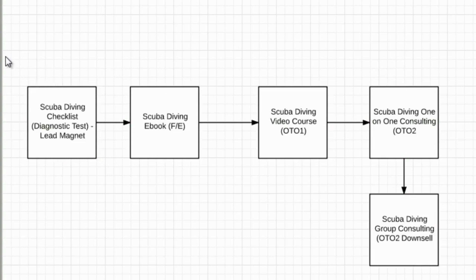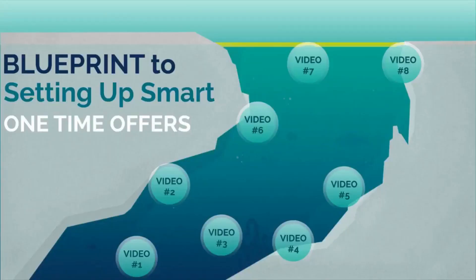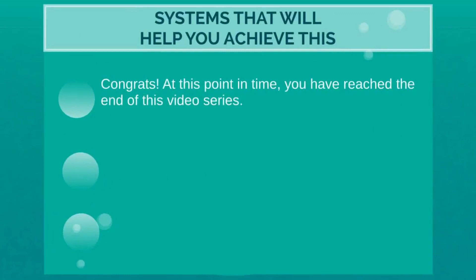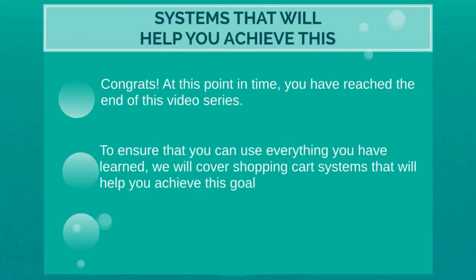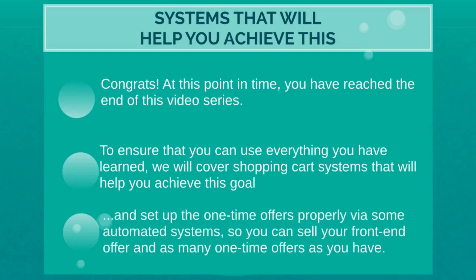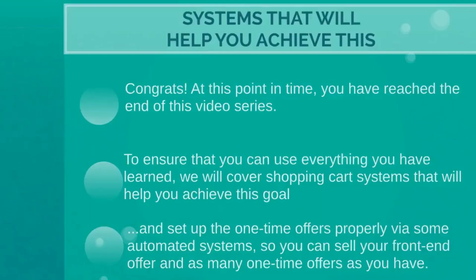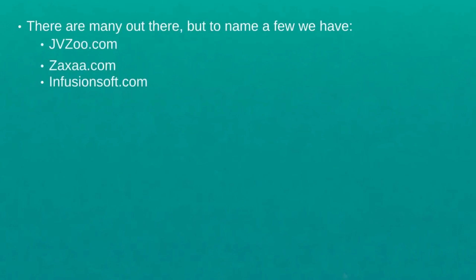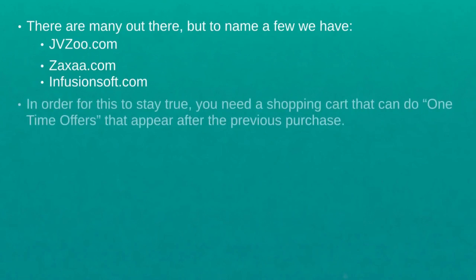Hello and welcome to video number eight. Congrats — you have reached the end of this video course! To ensure you use everything you've learned, we're going to talk about shopping cart systems that will actually help you achieve this goal and set up one-time offers properly via automated systems. So whenever somebody buys your front-end offer, they will be automatically presented with OTO one, OTO two, three, four, five — or however many one-time offers you have. A few options to name: JVZoo.com, Zaxaa.com, and Infusionsoft.com.